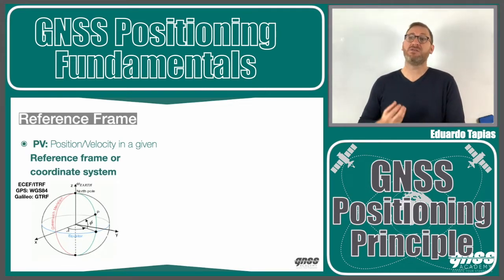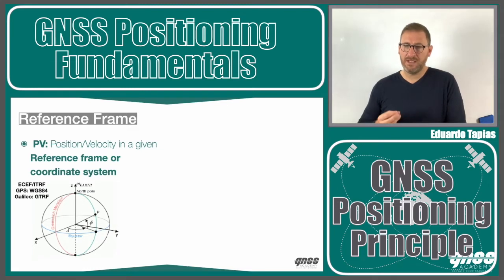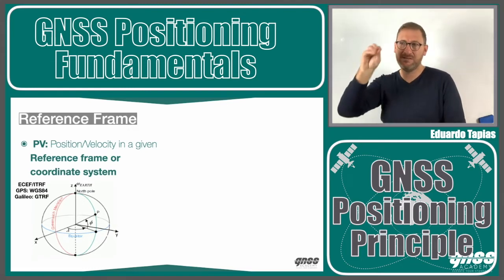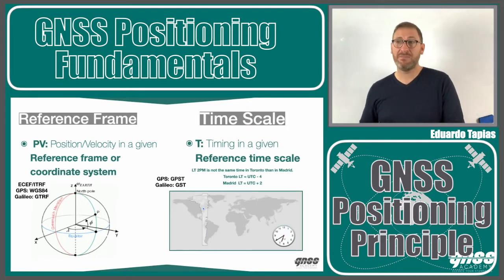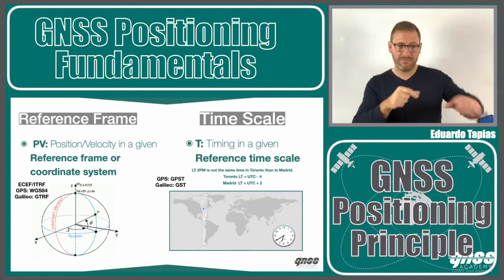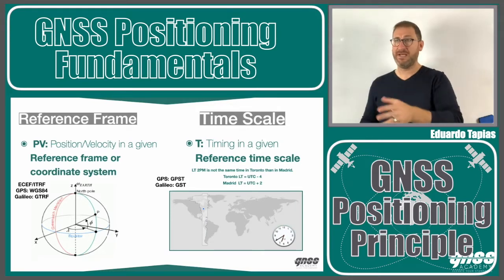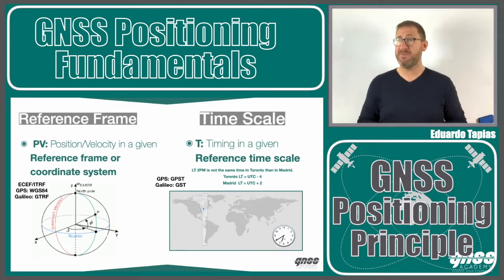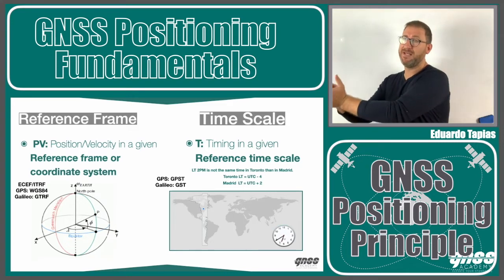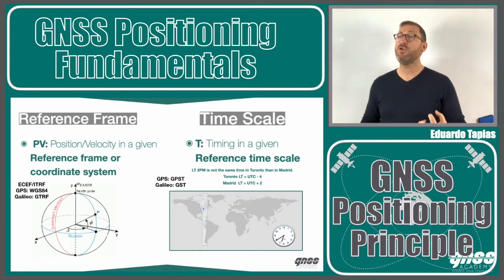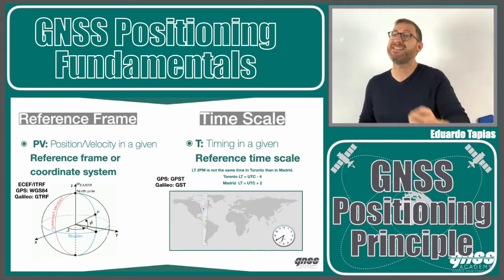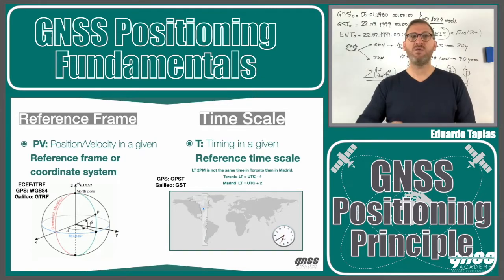You have to take this into account: when you have a solution based on GPS and Galileo, the reference frames will be different but really close to each other. The T in PVT — timing — is also very important. When we give a time, we need to give the time scale. For example, it might be 10 a.m. in Toronto but 4 p.m. in Europe. When using GPS, the reference time scale is the GPS time scale (GPS-T), and for Galileo it is the GST, the Galileo System Time.